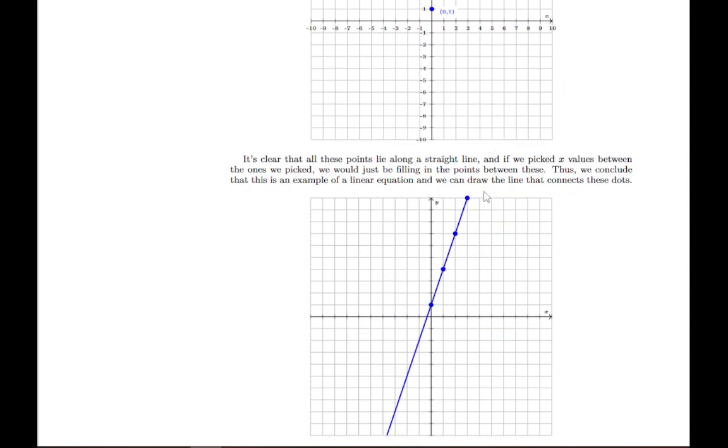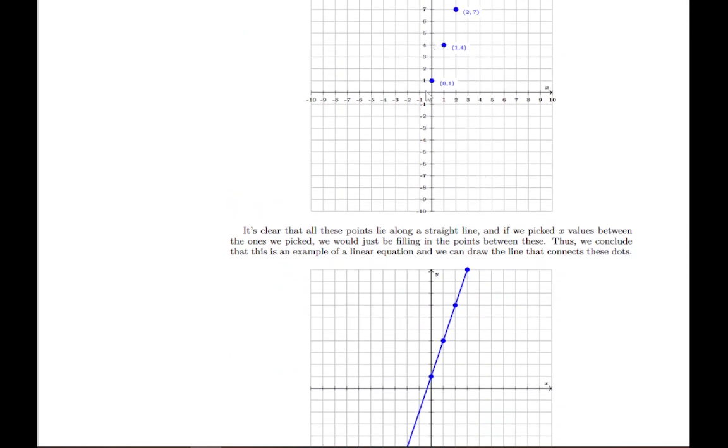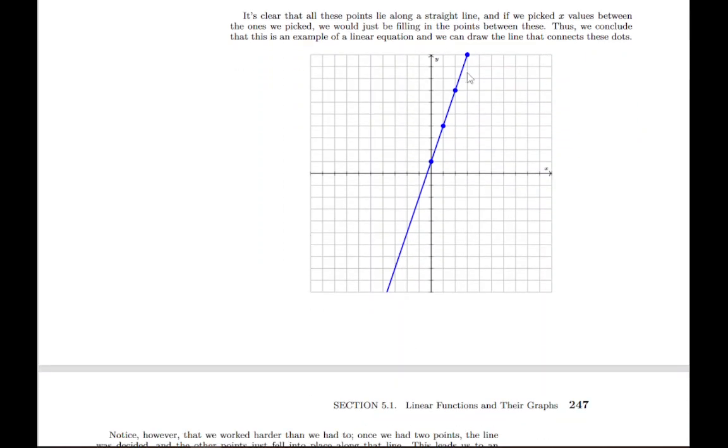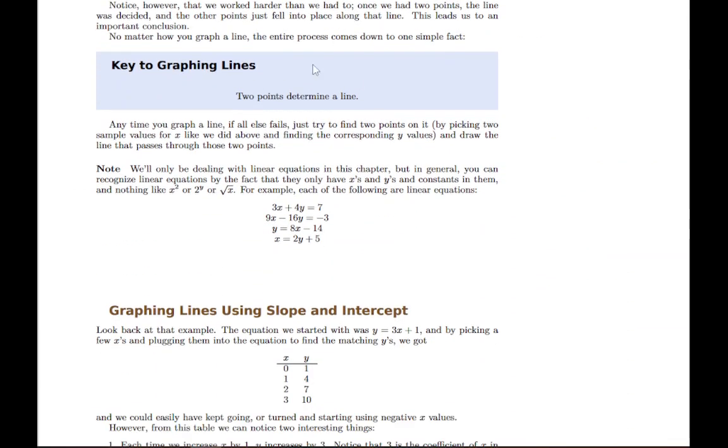What we recognize pretty quickly is that all we need is two of these points and that's enough to draw the whole line. This example has four points, and then you can imagine drawing more of them to see that whole line emerge, but pretty quickly we get this conclusion that two points describe a line.